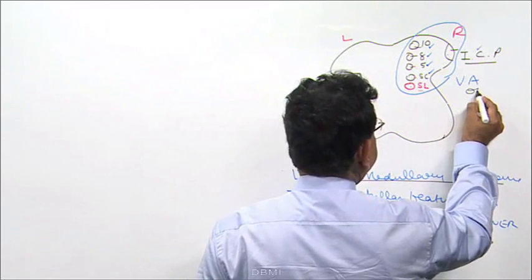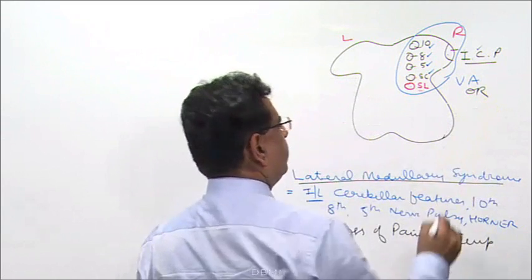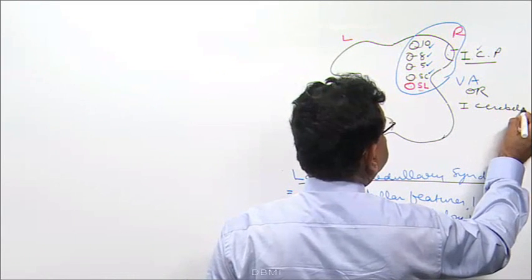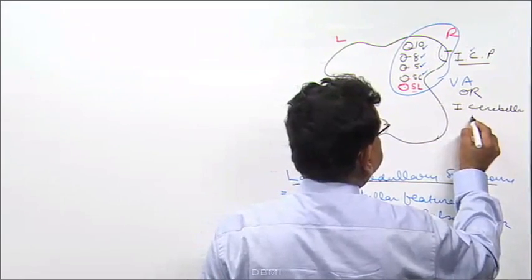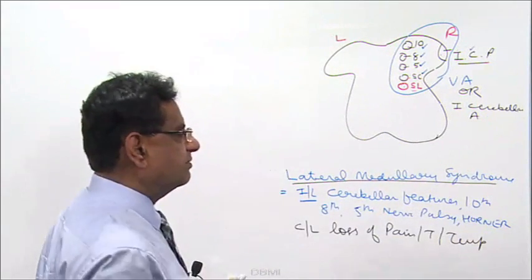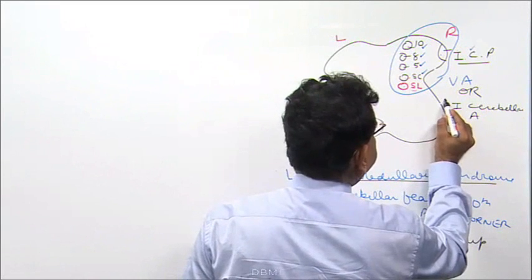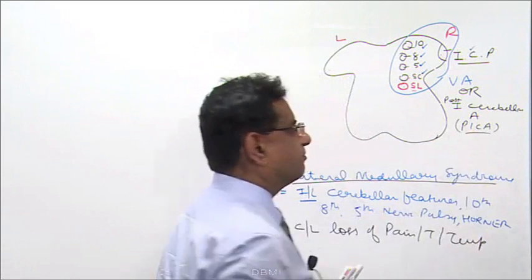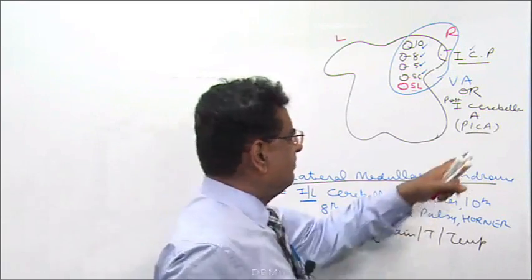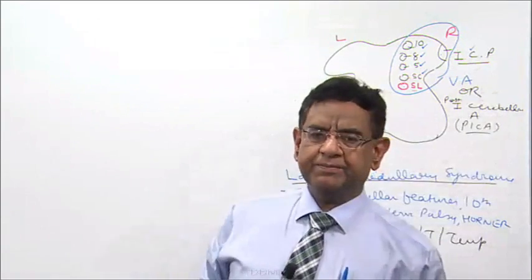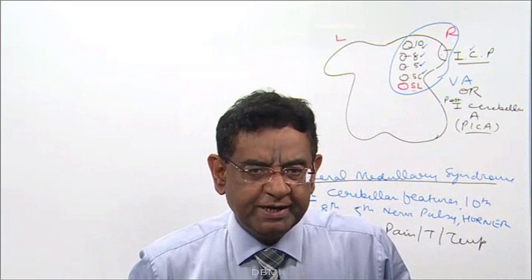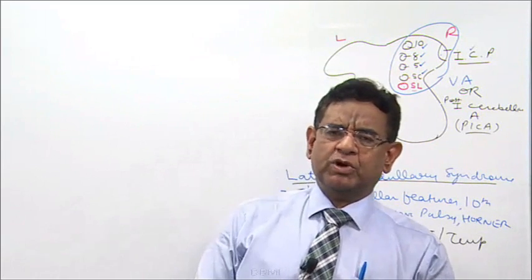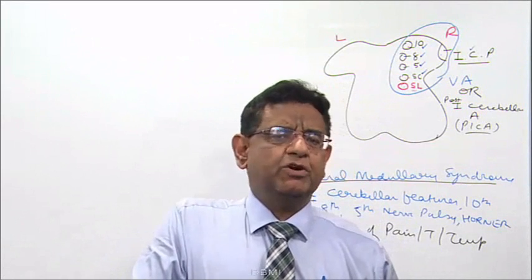The artery involved is the vertebral artery. Sometimes there may also be involvement of the posterior inferior cerebellar artery — PICA. PICA is also a branch of the vertebral artery. Either of the two arteries may be involved, but mainly they talk about the vertebral artery.